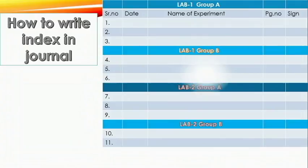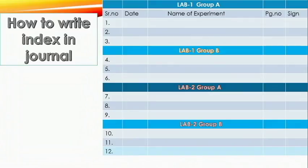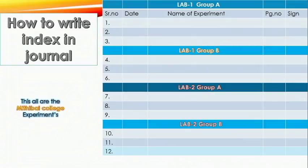Now coming to the topic of how to write the index in your journal. I have already displayed the chart where you can see there are two labs and each lab consists of two different groups — group one and group two. Each group contains three experiments, so according to this chart you have to perform a total of 12 experiments. Remember, all these experiments are based on the Mumbai University college experiment list.